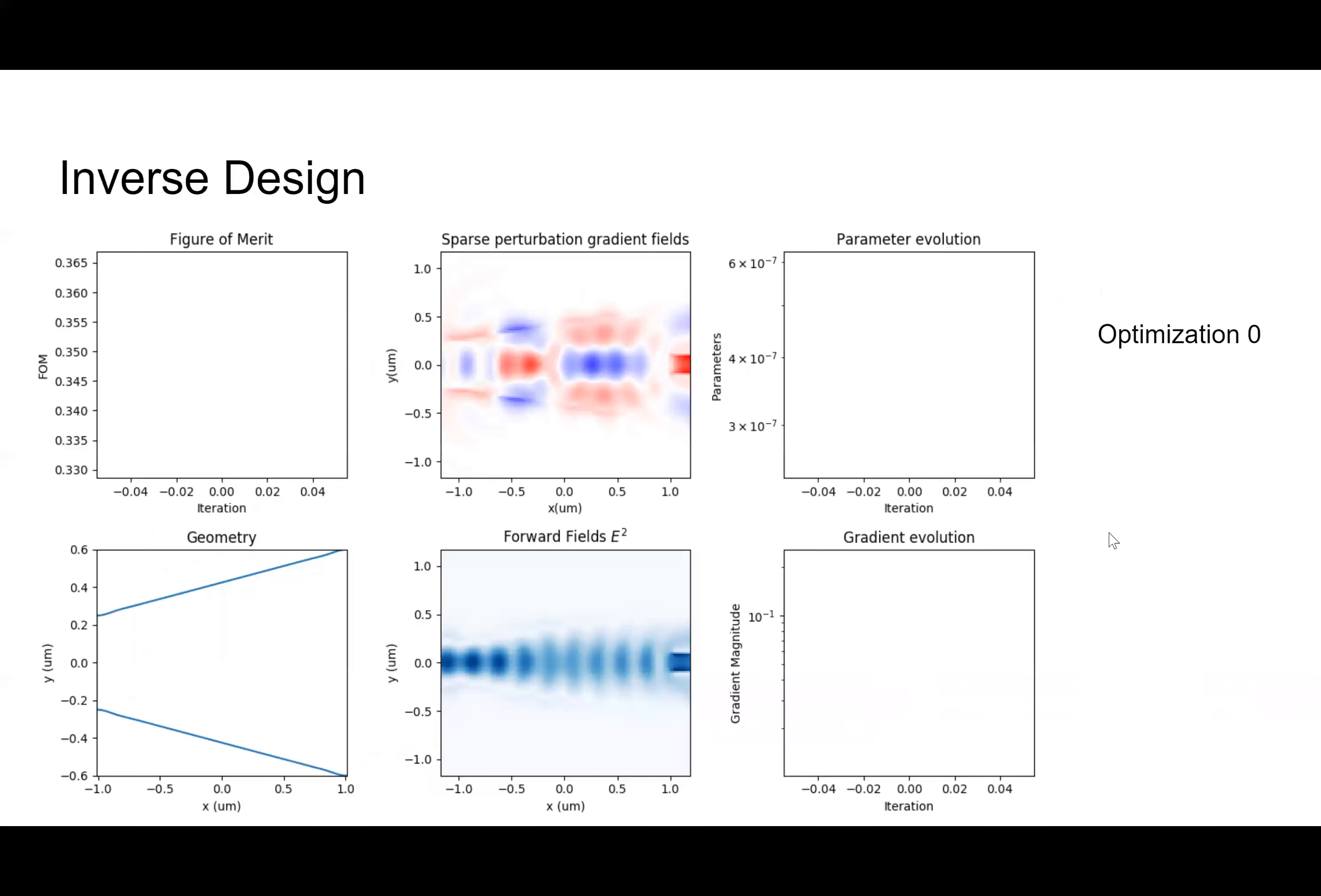And so now I have just some pictures of some examples of inverse design. This is from one of the different designs I was testing, or different sets of input parameters that I was testing. So this is optimization zero. Most of these graphs are empty at this point and the geometry is just a very basic, vaguely Y-shaped thing.